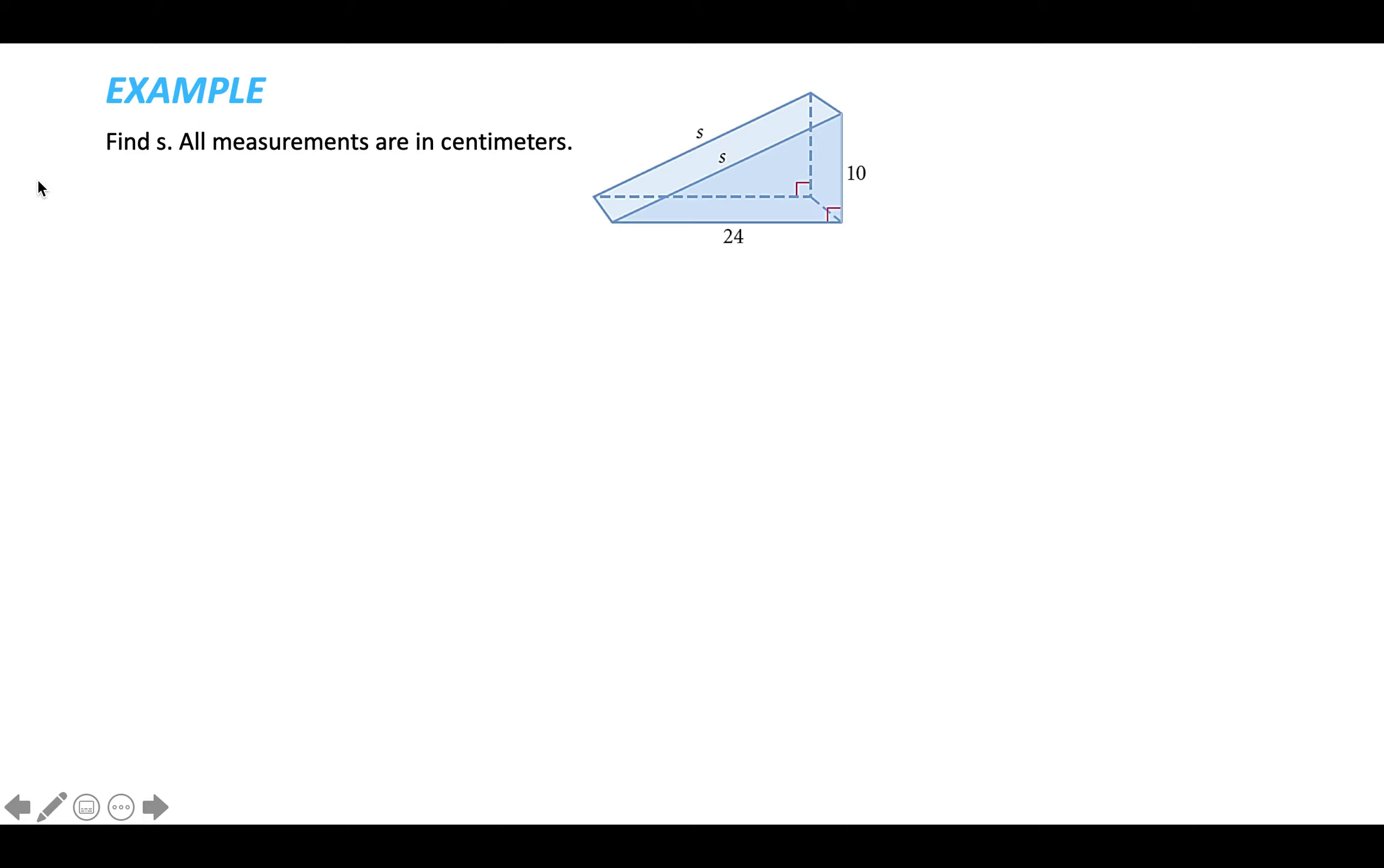Okay, one last one. So sometimes there's a triangle on a larger solid or a larger shape, and you can still use the Pythagorean theorem. So here they want us to find S, but if you notice, S is part of a triangle where the legs are length 10 and 24. So we can still use this equation. 10 and 24 are legs, so that's like the lengths of the legs, so that's like A and B. We plug 10 and 24 in for A and B.